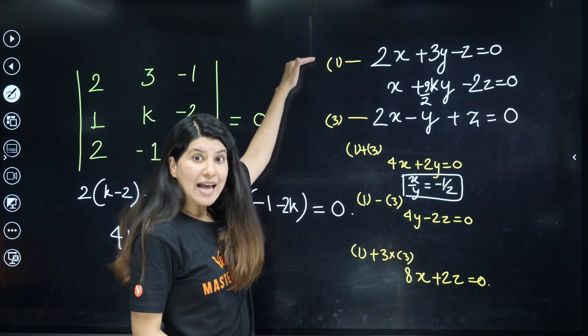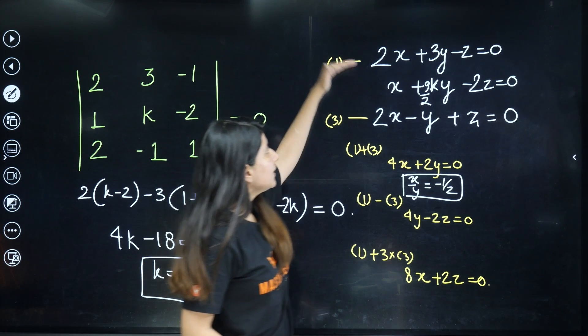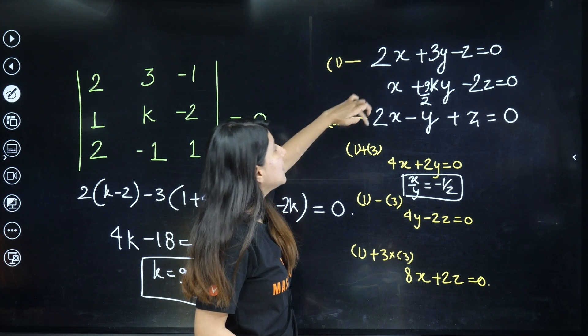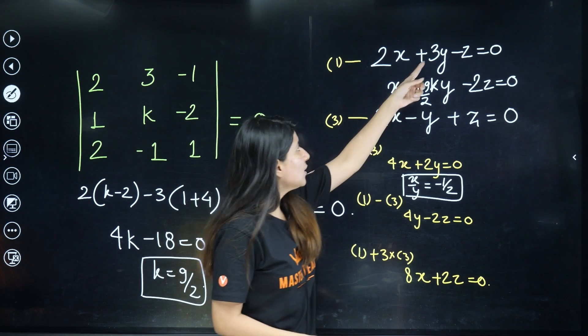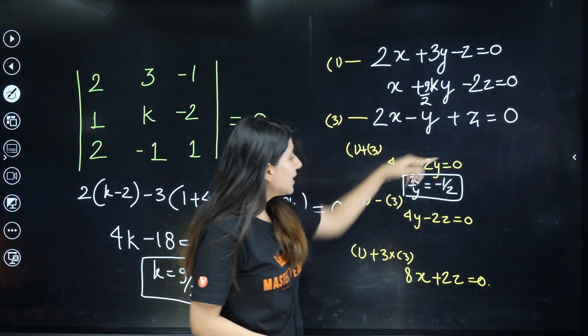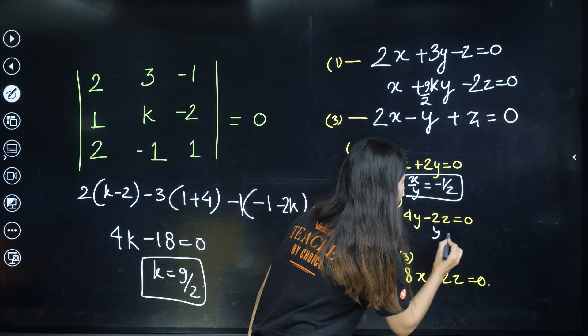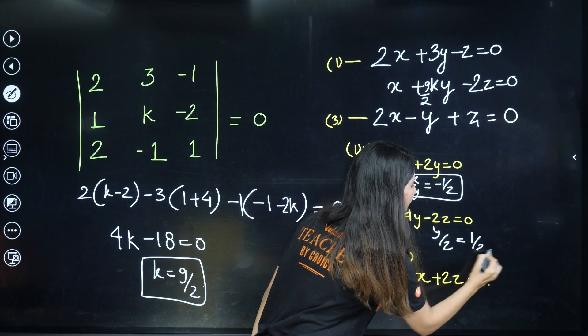Similarly, if you subtract 1 and 3, x will get cancelled out and you get a relation between y and z. So it will become 4y - 2z = 0. So y/z is coming out as 1/2.